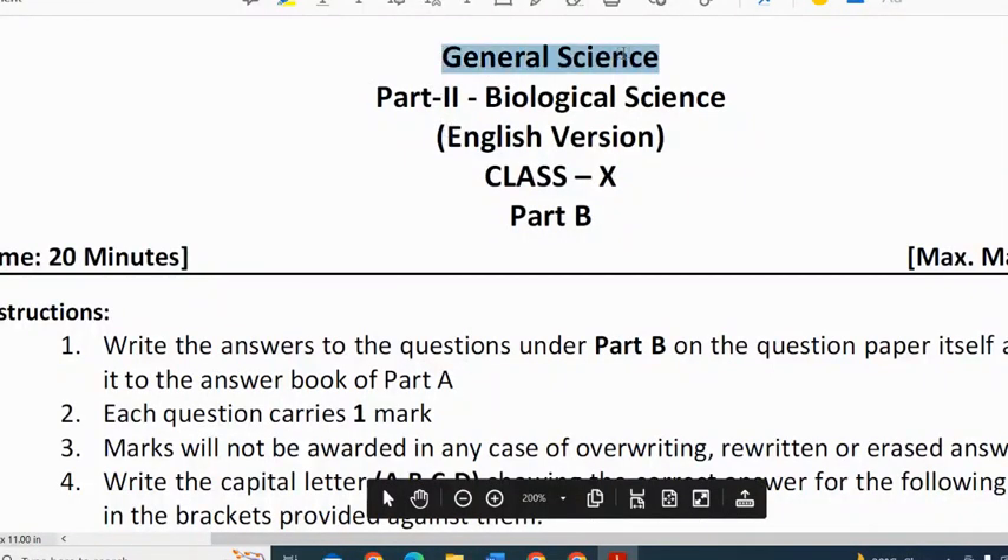We'll discuss general science, that is Biological Science Part B Question Paper. In Part B we have 10 questions. Each question carries 1 mark. Total weightage is 10 marks. Let us see what questions appeared in Part B.